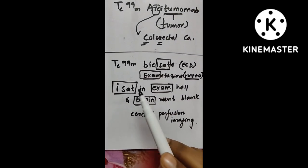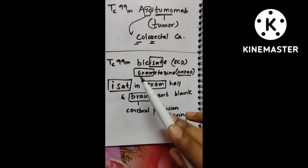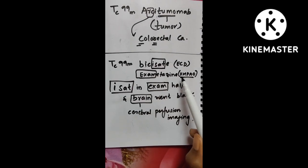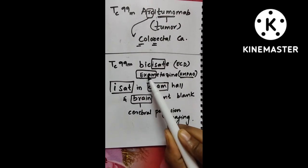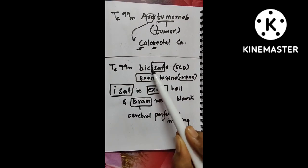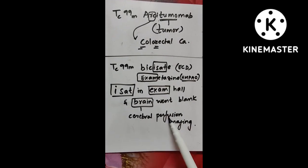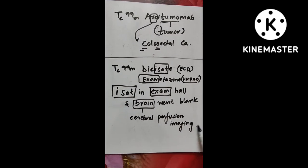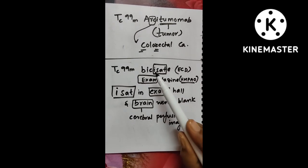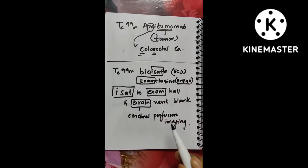Now comes the fourth one. Fourth one is, we remember it as there are five friends. Hump-Ans, we went to the exam hall and you sat there, I sat, but my brain went blank. So Hump-Avo, we went to the exam hall, right? Exametazine is Hump-Avo and you sat, that is I sat, Bicisat. I sat and the brain went blank, right? So brain here is cerebral perfusion imaging. So for cerebral perfusion imaging, you use Hump-Avo that is exametazine and Icisat is Bicisat. This completes the cerebral perfusion imaging.